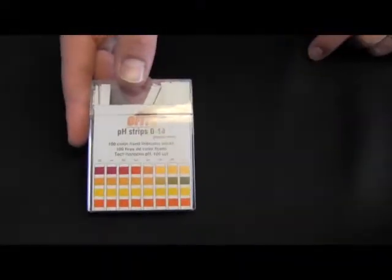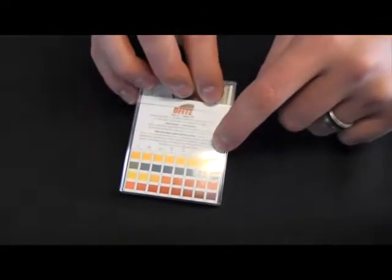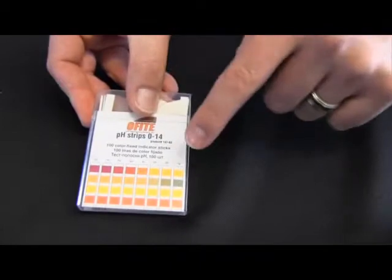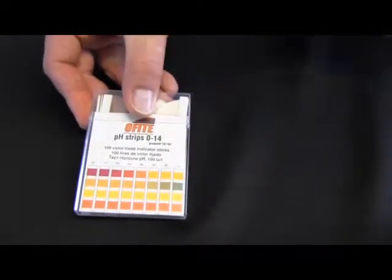Here are the pH strips. You'll notice that the scale ranges from 0 to 14, 14 being basic, 0 being acidic, and 7 is our neutral point.